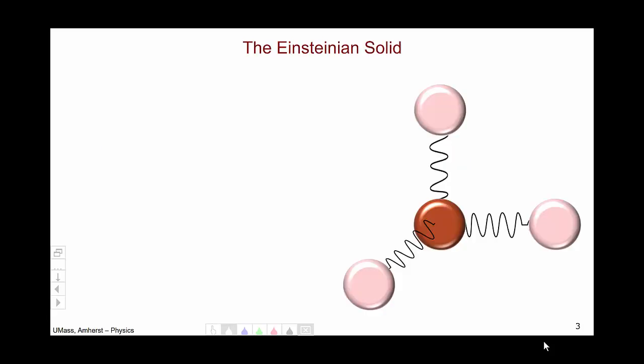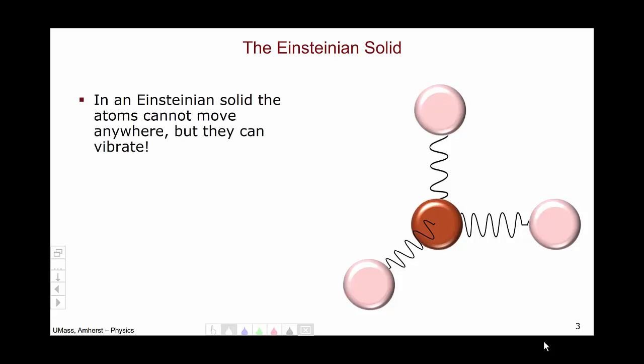We are going to consider the Einsteinian solid, where we treat each atom as connected to its neighbors in three dimensions by springs. In an Einsteinian solid, the atoms can't move anywhere, but they can vibrate on these springs that we're using to represent the atomic bonds.